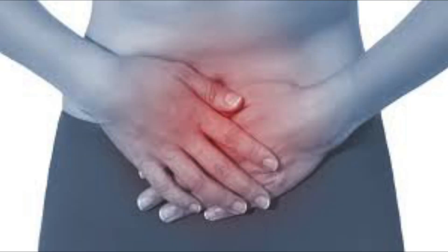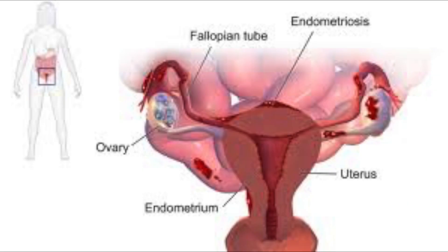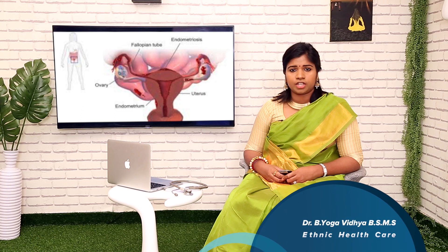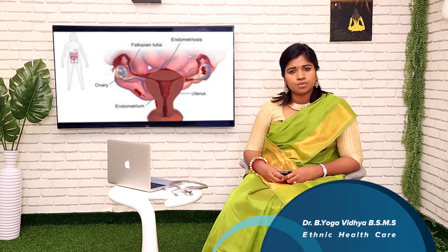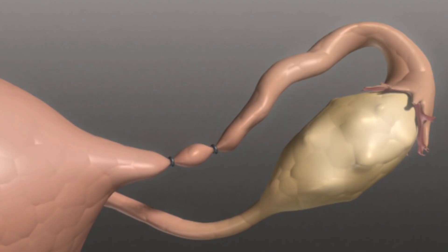If your previous pregnancy was ectopic, there is an increased risk for subsequent pregnancies. Pelvic inflammatory disease, known as PID, might also cause ectopic pregnancy. Likewise, endometriosis — that is, infection in the inner layer of the uterus — could also lead to ectopic pregnancy. Improper or unsuccessful tubulation, one type of family planning, might also lead to ectopic pregnancy.